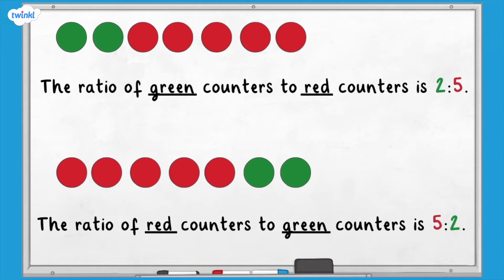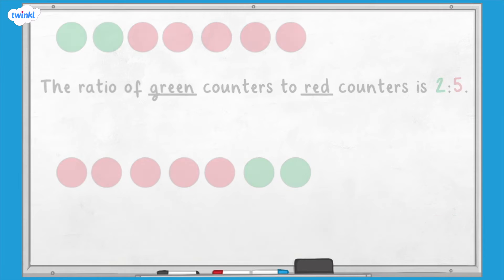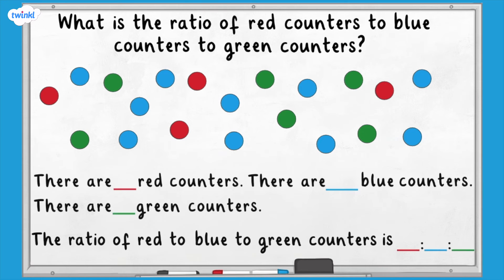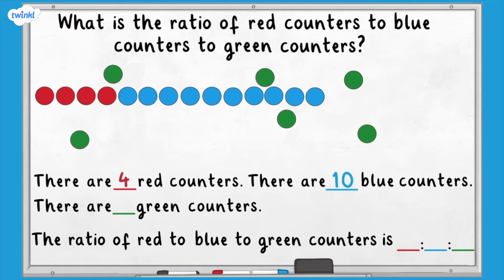Sometimes we compare more than two parts using ratio. For example, what is the ratio of red to blue to green counters here? First of all, we can count the counters of each colour, making sure to keep the numbers in the same order as they are in the question. There are four red counters, ten blue counters, and six green counters. The ratio of red to blue to green counters is four to ten to six.